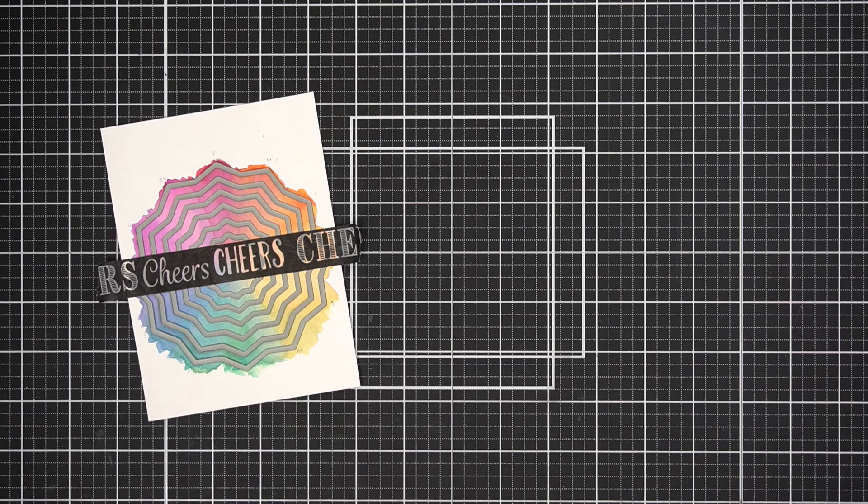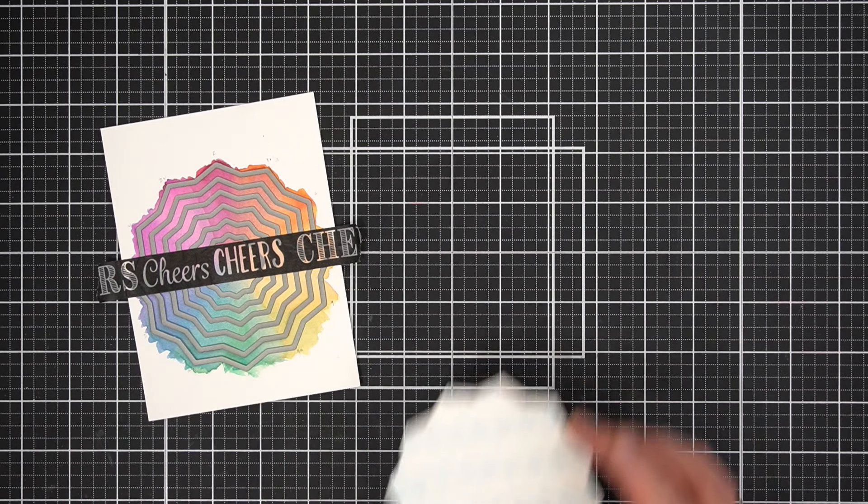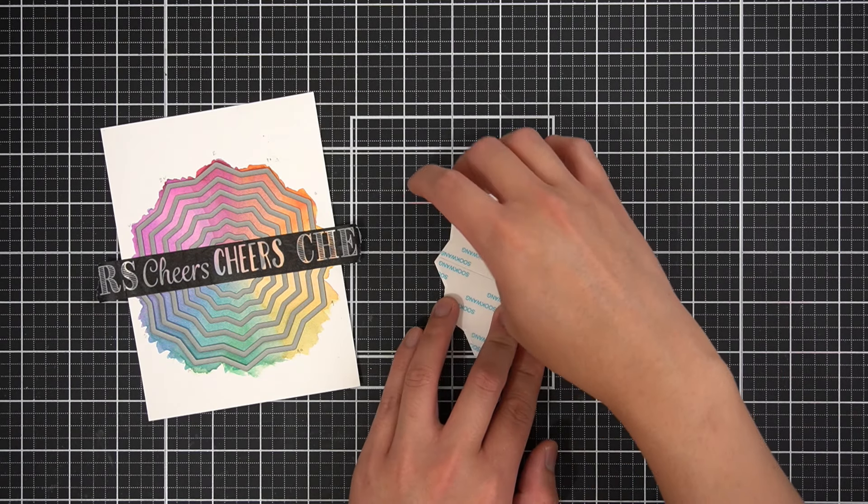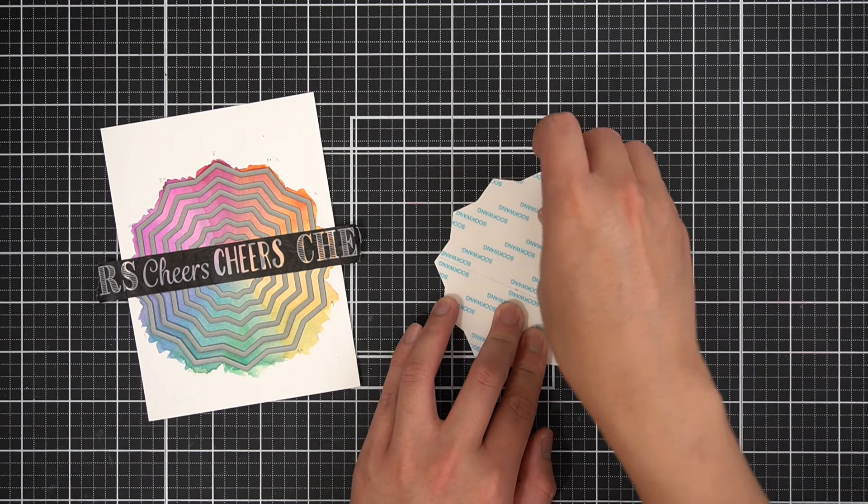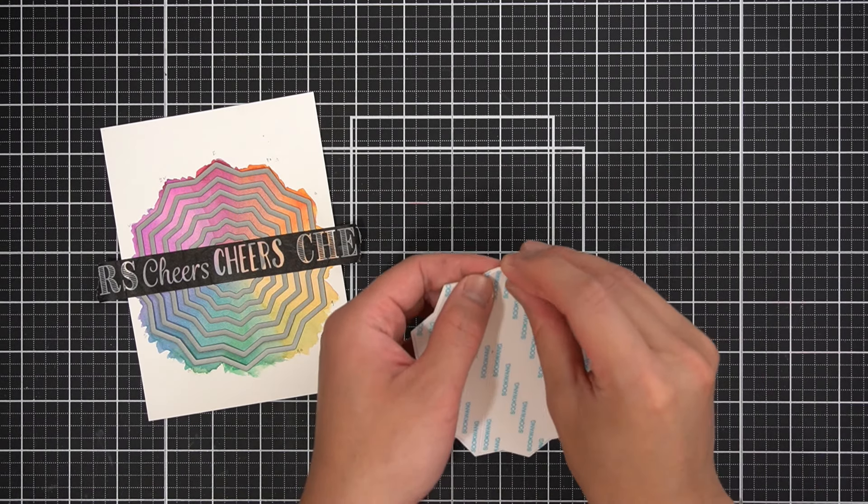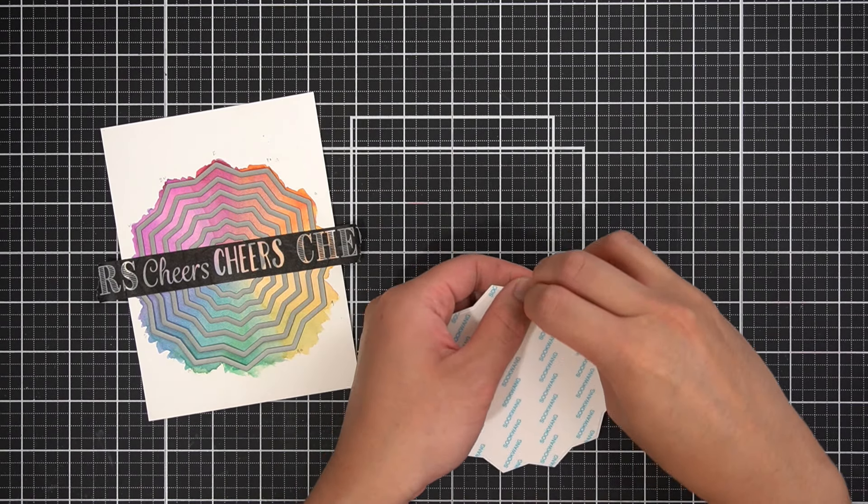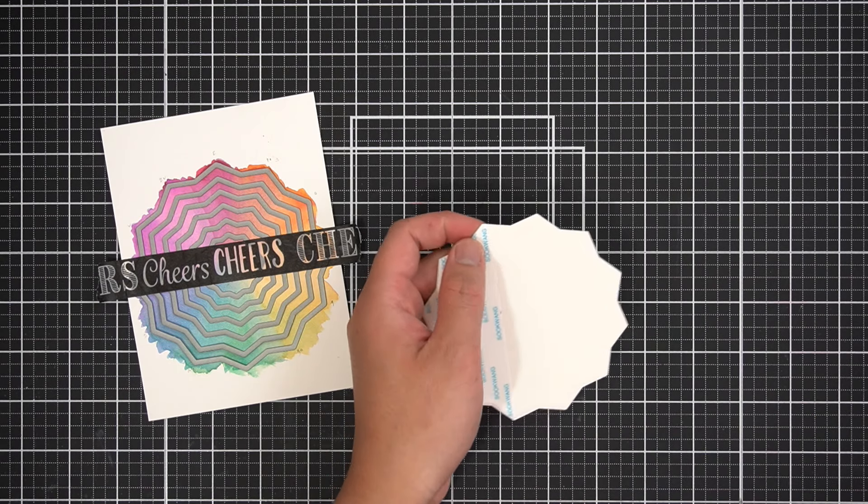I'm going to try and keep all the die cut pieces within the steel dies, but if they fall out for you, just make sure you group them together in the original places. I'm also grabbing one of the adhesive backed die cuts and removing the backing paper so that the adhesive side is facing me.